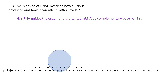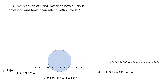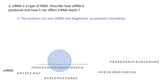So that siRNA guides that enzyme to a specific target mRNA by complementary base pairing, and then finally, as a consequence, that enzyme is then able to cut up that target mRNA.